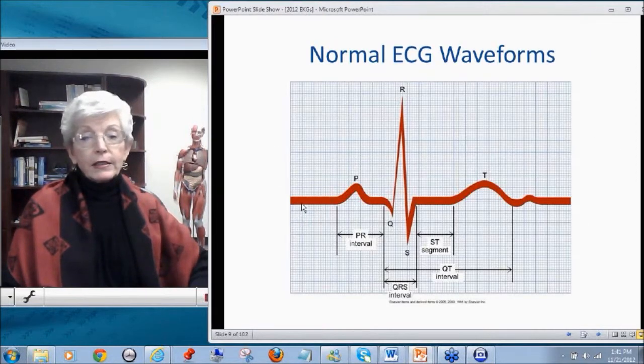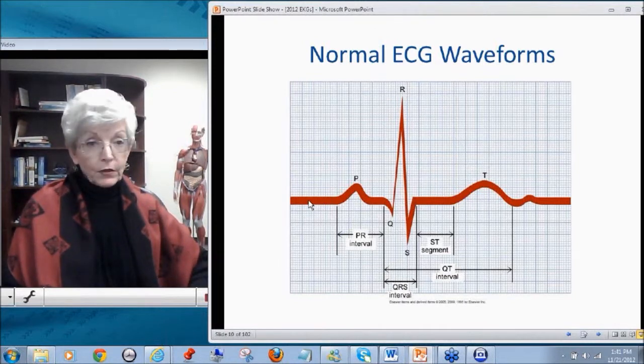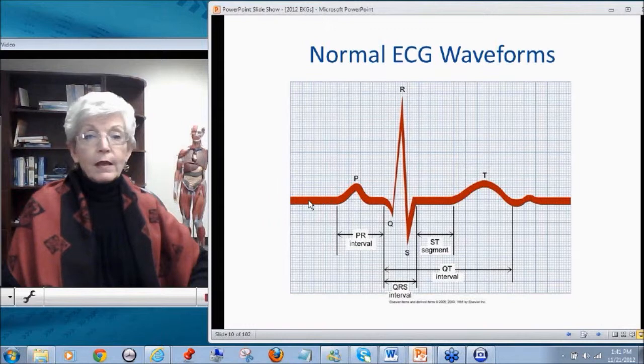And to look again at a normal EKG patterns, the first thing we see, I want you to note that if you just follow along this baseline here, this baseline, or a straight line, if you will, is called the isoelectric line. The deviations from the isoelectric line are our waves.